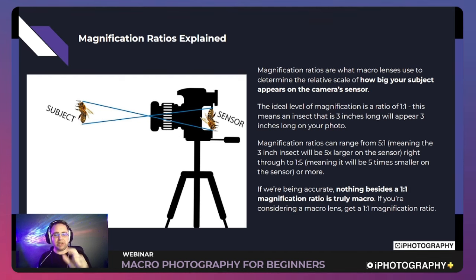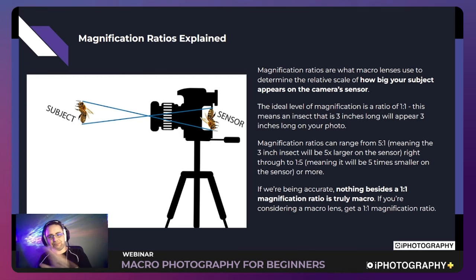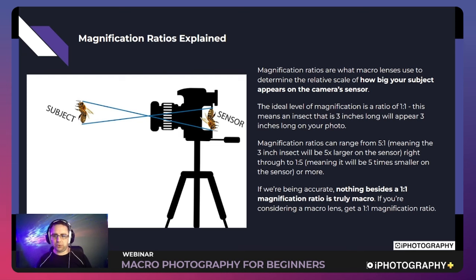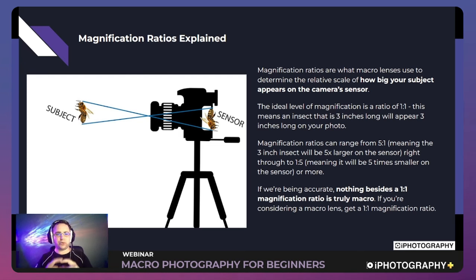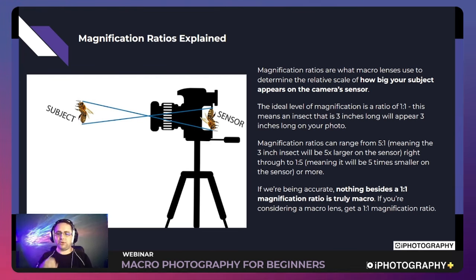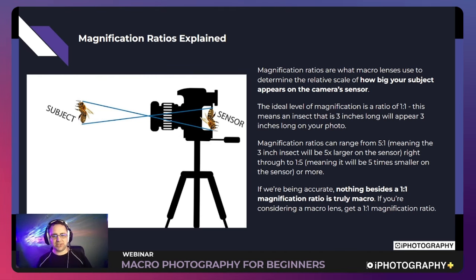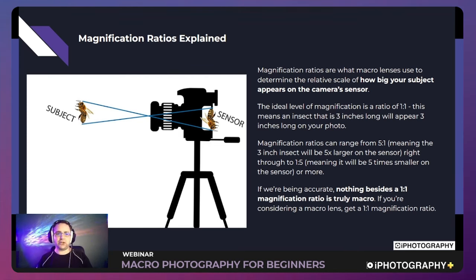Magnification ratios can also change. You could go to five-to-one, meaning the object is five times larger on the sensor, or one-to-five, meaning it's only 20% of its actual size. To be a true macro photograph you need your subject at a one-to-one ratio. Some people outside that range still consider it macro photography, but purists and professionals will say one-to-one magnification is really what you need.